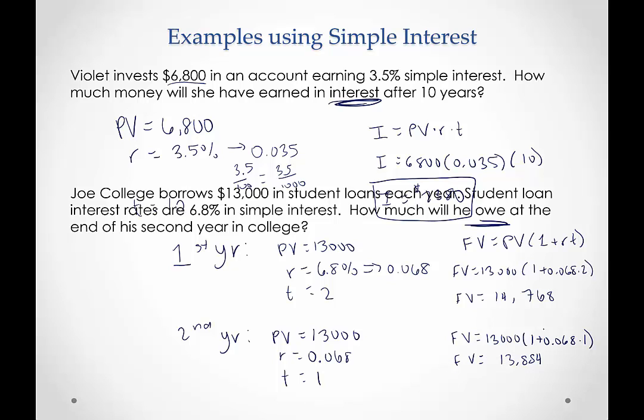And so now how much does he owe for the two years combined? Well, we want to add those values. So we're going to say 14,768 + 13,884. He's going to owe a total of $28,652.